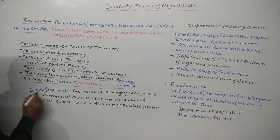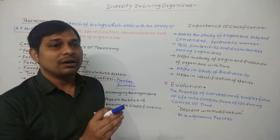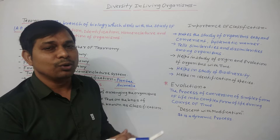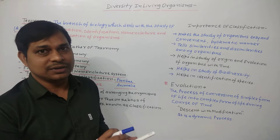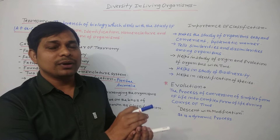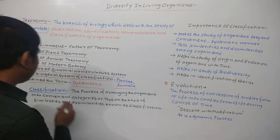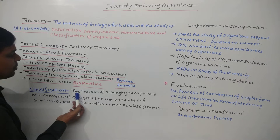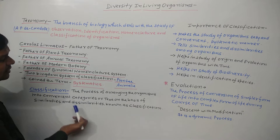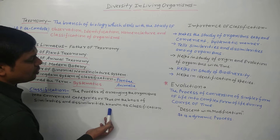Classification is the process of arranging the organisms into different convenient categories, taxa, or groups on the basis of similarities and dissimilarities. The process of keeping organisms in convenient categories or taxa or groups in the biological world on the basis of similarities and dissimilarities is known as classification.